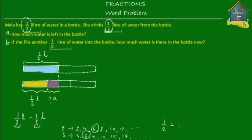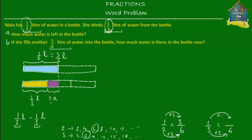We convert half to something upon six and one third to something upon six. For the first fraction: to convert two to six, you multiply two by three to get six, so you also multiply the numerator by three and get three. So half a liter becomes three sixths of a liter. Similarly for one third: to get six from three, you multiply by two, so you also multiply the numerator by two and get two. So one third of a liter is equivalent to two sixths of a liter.